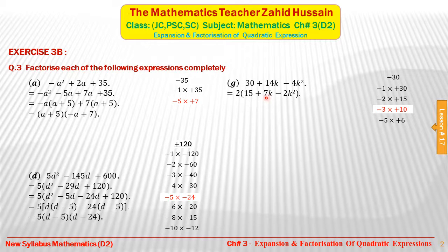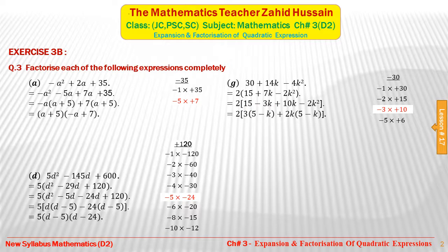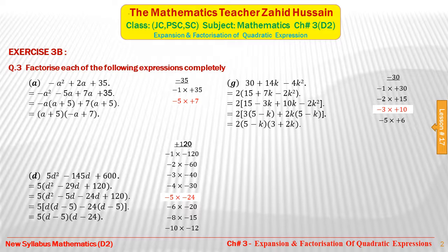We break the middle term: 2(15 minus 3k plus 10k minus 2k²). From the first two terms, 3 is common leaving (5 minus k). From the last two terms, 2k is common: 10k divided by 2k gives 5, and minus 2k² divided by 2k gives minus k, leaving (5 minus k). Since (5 minus k) is common in both groups, the final factors are 2(5 minus k)(3 plus 2k).